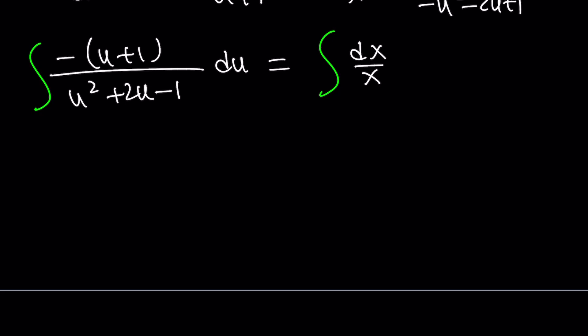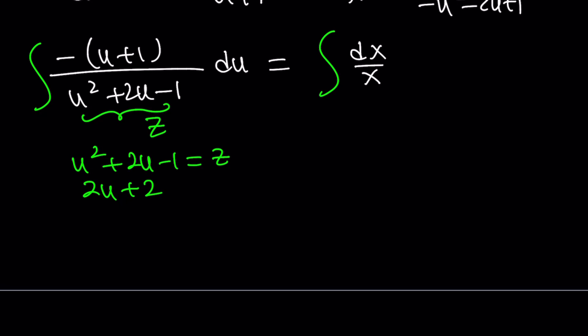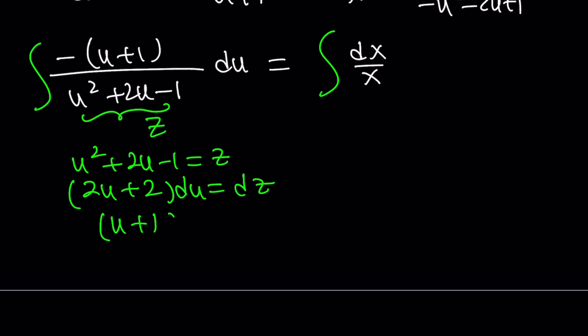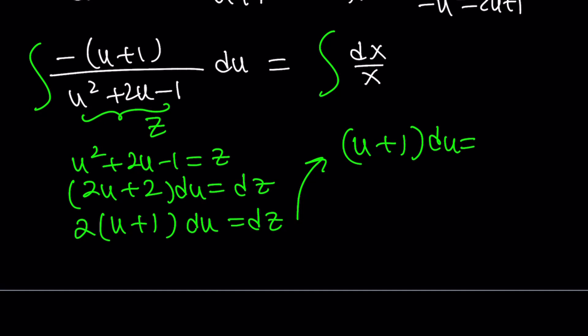How do we integrate? The right-hand side is easy because it's just ln. The left-hand side is also ln — if you call the denominator something like z and differentiate it, you'll get the numerator pretty much. So let z equal u² plus 2u minus 1. Differentiating: 2u plus 2 du equals dz. I do have (u plus 1) du, which multiplied by 2 gives dz, so (u plus 1) du equals ½ dz.